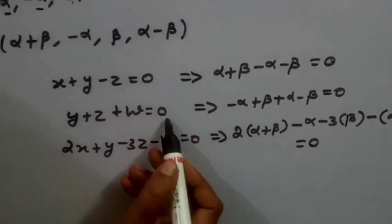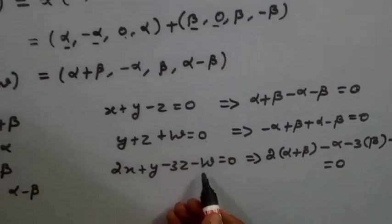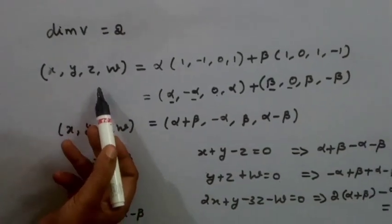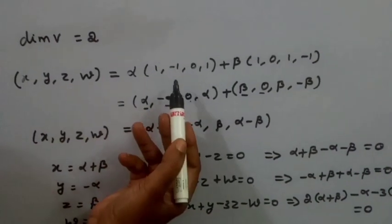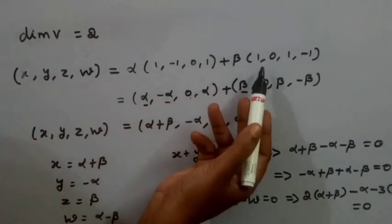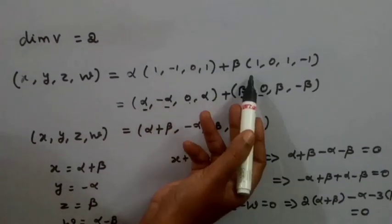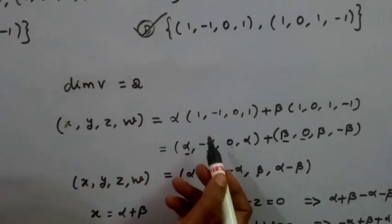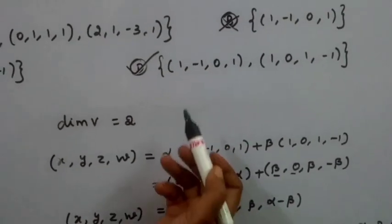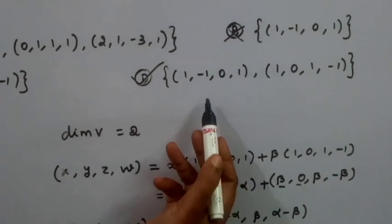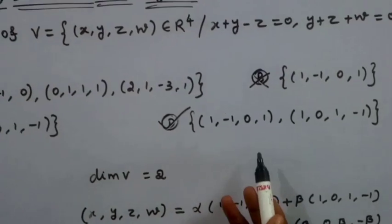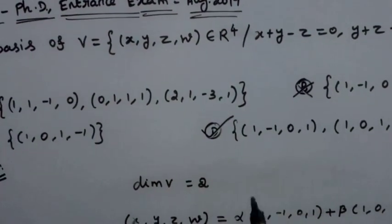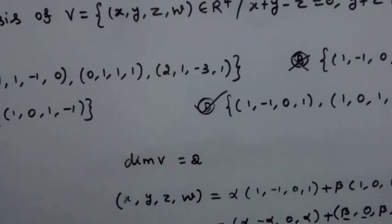Since the two vectors form a linear combination that satisfies all three given conditions, they are indeed basis elements of V. Option D with 2 vectors is the correct answer.